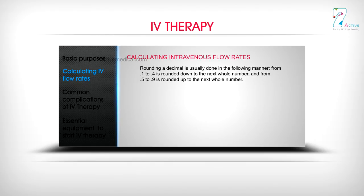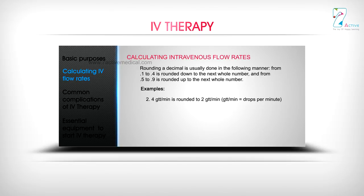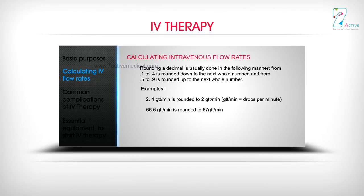Examples: a result is rounded up to the next whole number. For example, 2.4 gutta per minute is rounded to 2 gutta per minute. Gutta per minute is equal to drops per minute. 66.6 gutta per minute is rounded to 67 gutta per minute.